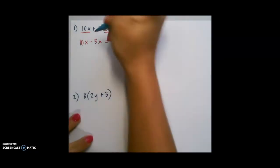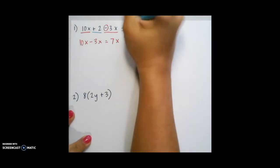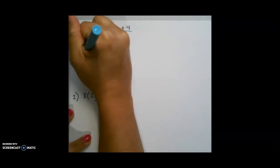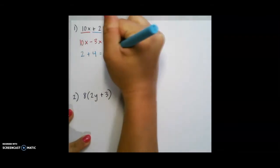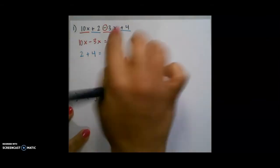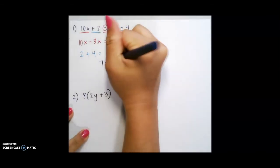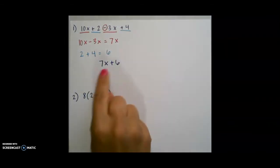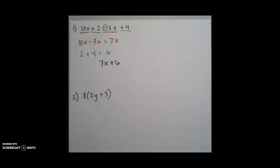Then we have plus 2 and plus 4. We simply add these two together, and that gives me 6. So our final answer here would be 7x plus 6. We know that there is a plus sign in the middle because this is a positive number.